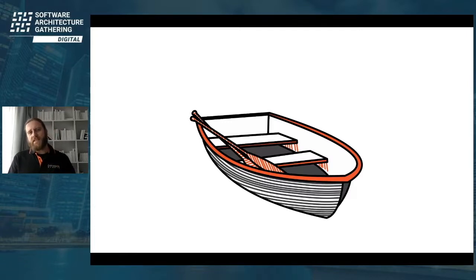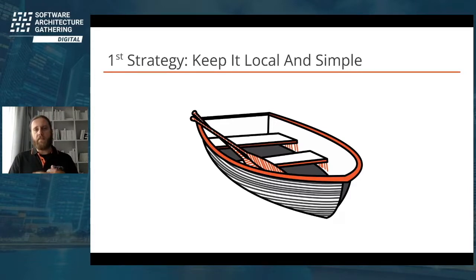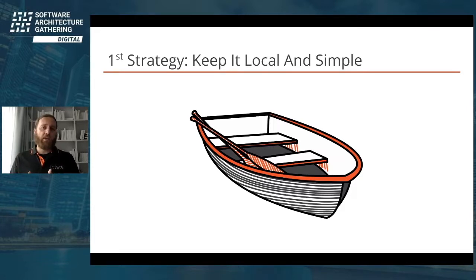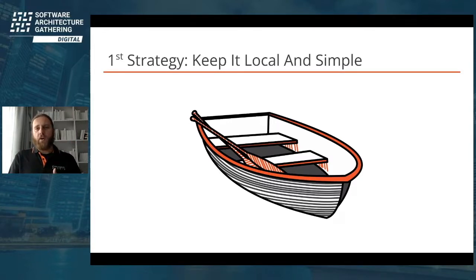So what does this have to do with both architecture and DevOps? The answer is the first strategy I would like you to take away: keep it local and simple. If something is simple, easy to understand, easy to change, easy to set up, easy to hand over — chances are high that this will help you improve on all Three Ways of DevOps. Better flow, easier feedback loops, and an environment where change, learning, and experimentation are easy.